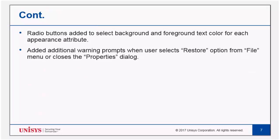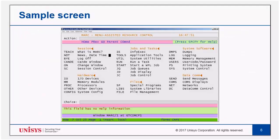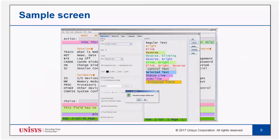Two radio buttons have been added in the Appearance tab to specify background and foreground color for each text display attribute independently. WebEnabler will prompt the end user when the user selects the restore option or closes the properties dialog. This is a sample screenshot of the mark home screen, where we have set a few color combinations for different display attributes. This is how the Appearance tab will look — the user can select the new attributes and apply different color schemes.